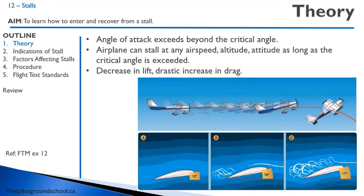Let's begin with some theory. We covered this a bit in our ground school. Remember our angle of attack — the angle that the wing chord makes with the relative airflow — has a critical angle. Above that critical angle, the coefficient of lift decreases and drag increases. Here's an important concept: the airplane can stall at any airspeed,